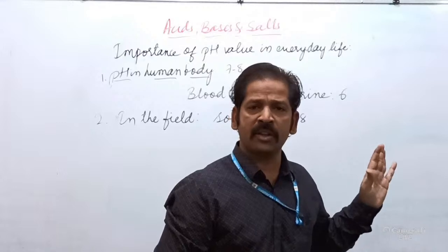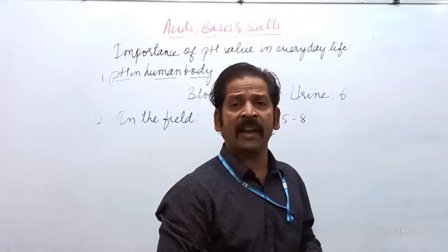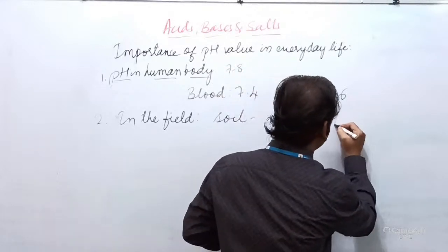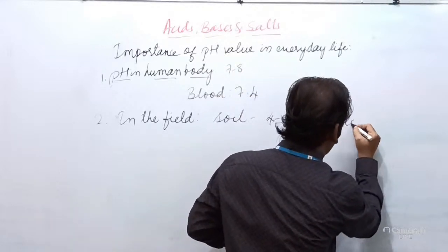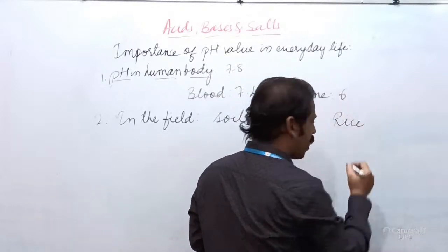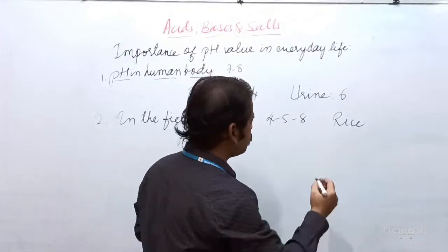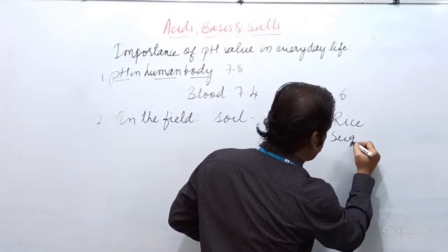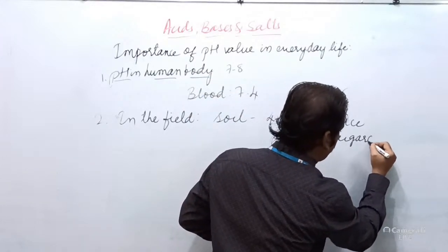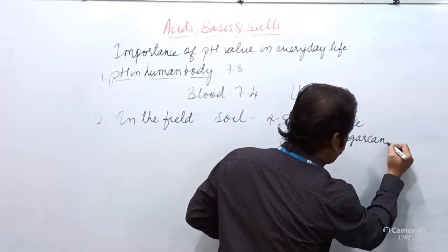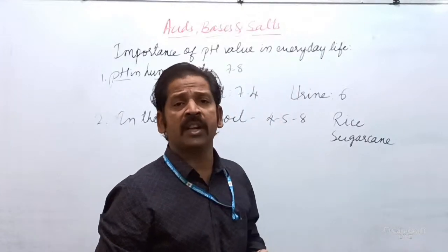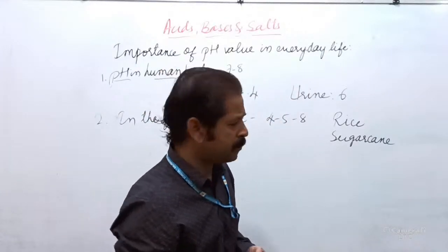For example, plants like rice, sugarcane, and citrus fruits each grow in different ranges of soil pH.